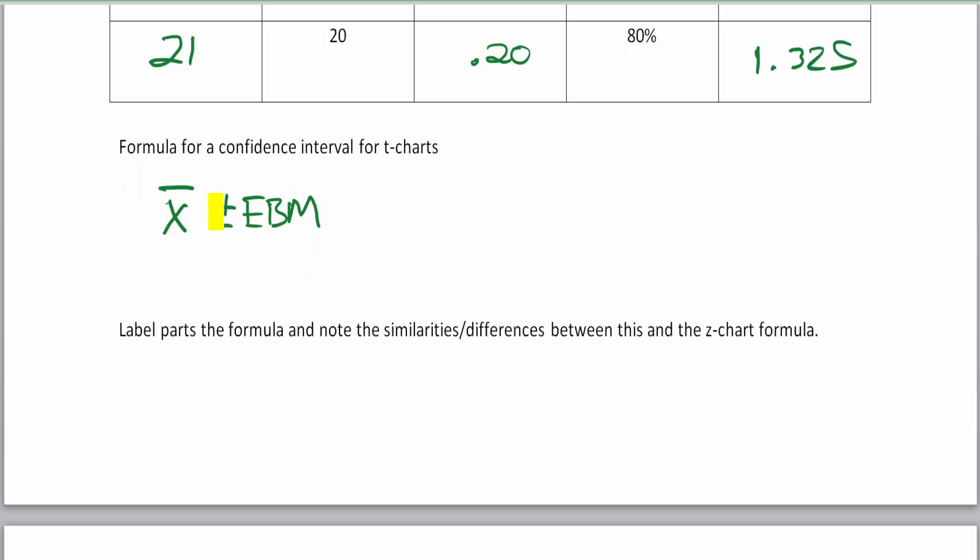Now this looks familiar because this is the same setup for the last confidence interval for the z-chart. We're now going to say our EBM is equal to t alpha divided by 2 times the standard deviation—now I used a lowercase letter s there—divided by the square root of the sample size.